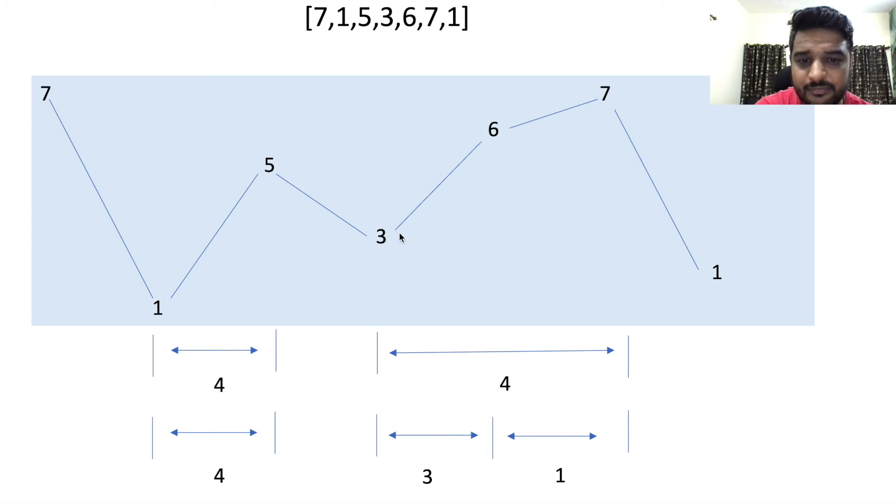For 3, is 3 greater than 5? No, so we move forward. For 6, is 6 greater than 3? Yes, so we subtract 6 minus 3 which is 3. For 7, is 7 greater than 6? Yes, so we subtract 7 minus 6 which is 1. When we sum this up, 4 plus 3 plus 1, we get the same answer. That's the trick to solve this problem in an easier way.